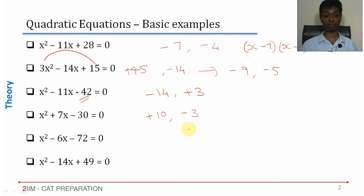x² - 6x - 72. Product is negative. 1 positive, 1 negative adding up to -6. This gives us -12 and +6.